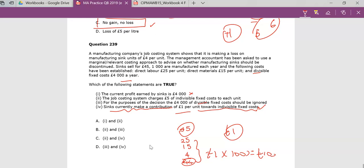We do not ignore the divisible fixed costs. They are variable. They're varying as we're going along. So that's not correct. The job costing method is charging. Yes, that's correct, because that's where we're going, which is why we're making a loss of 4.